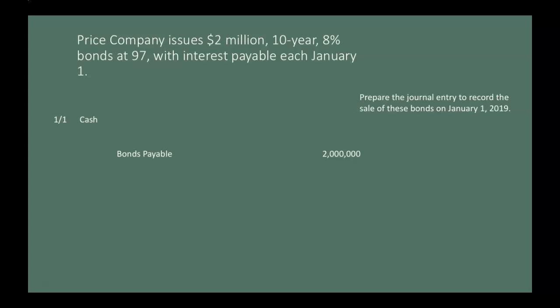Our cash amount is $2 million multiplied by 97%, because issued at 97 means 97% of face value. Two million times 0.97 gives us $1,940,000. You'll notice debits and credits don't equal, so a third account is needed. Since we issued the bonds below 100% of face value, we have a discount on bonds payable. That discount is the $60,000 difference between the bonds payable face value and the cash actually received.